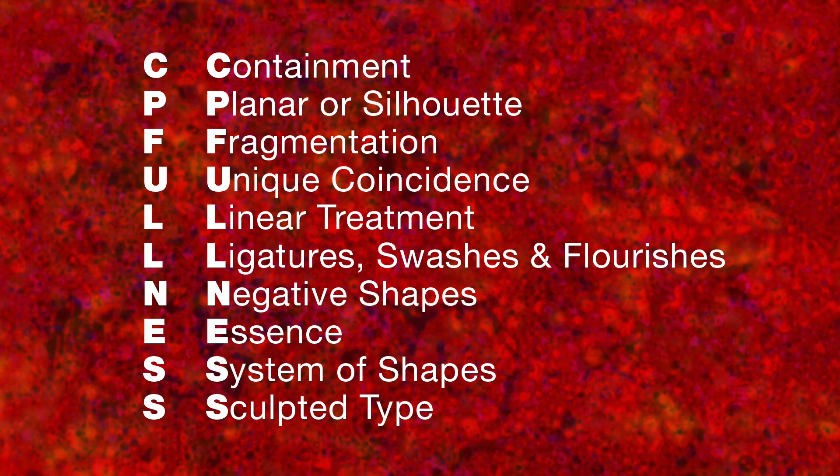Sculpted type is the tenth of the ten visual techniques for logo design. They are: containment; planar or silhouette; fragmentation; unique coincidence; linear treatment; ligatures; swashes and flourishes; negative shapes; essence; system of shapes; and sculpted type.